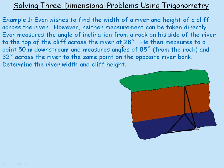He has an instrument to measure the angle of inclination to the top of the cliff at the opposite side, which is 28 degrees — that angle in the vertical triangle is 28 degrees. He also measures downstream to a point 50 meters downstream and measures two angles to that point: 85 degrees and 32 degrees.